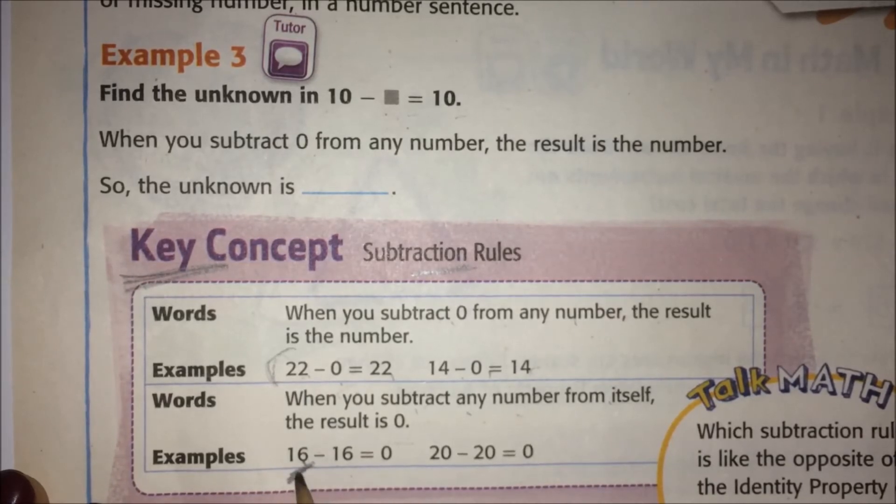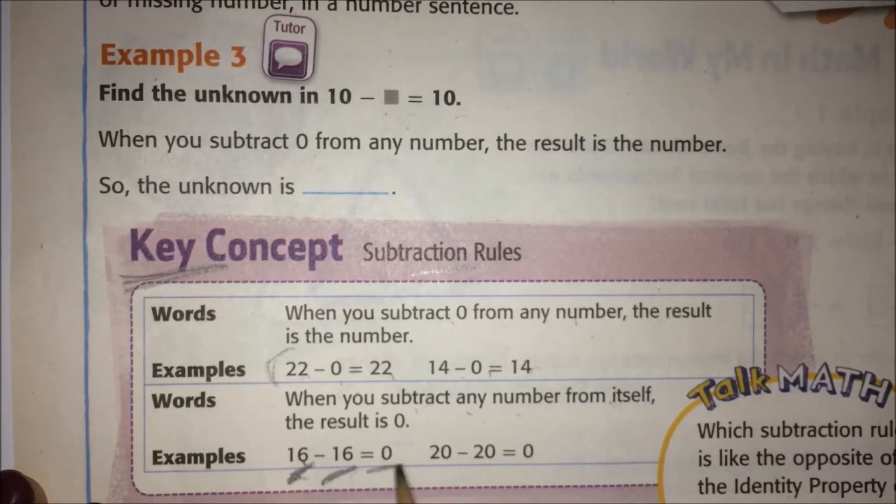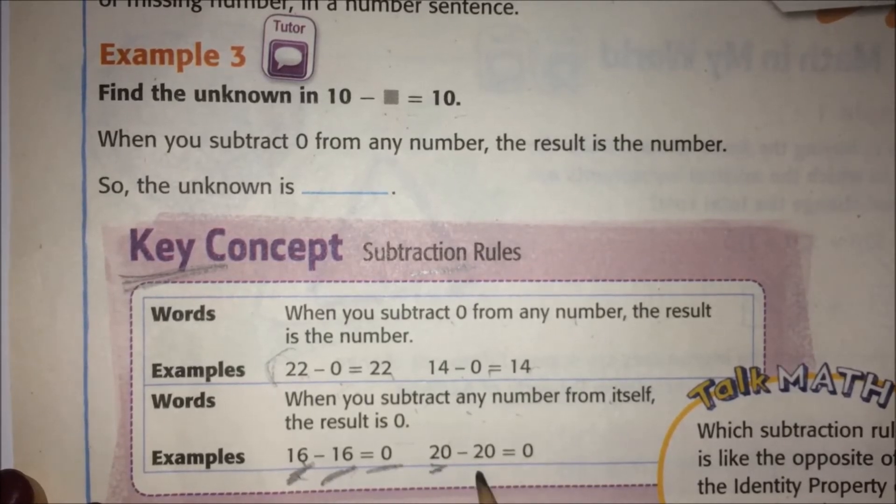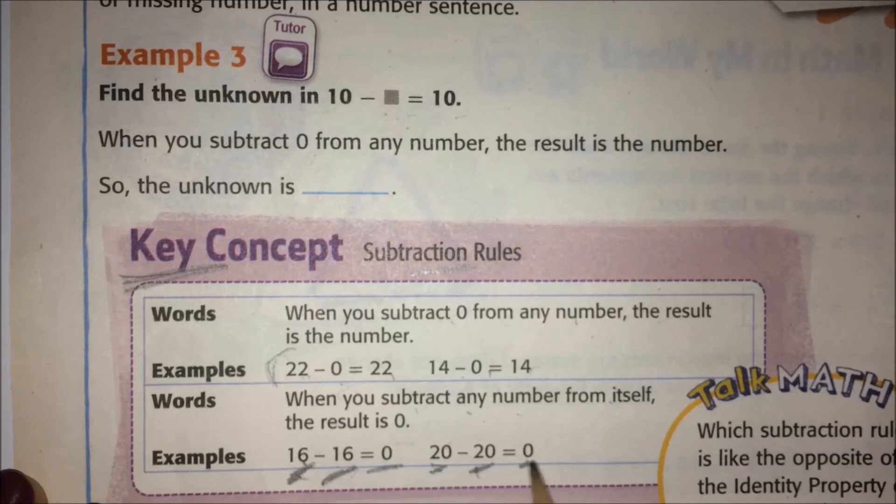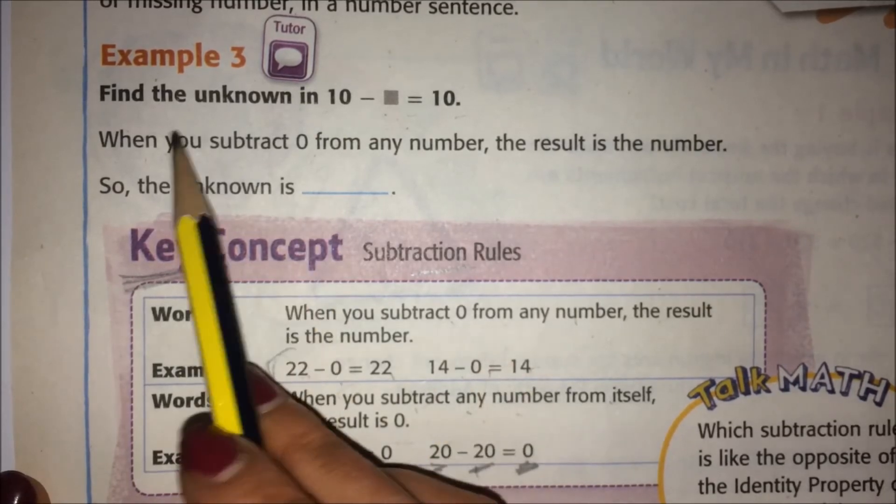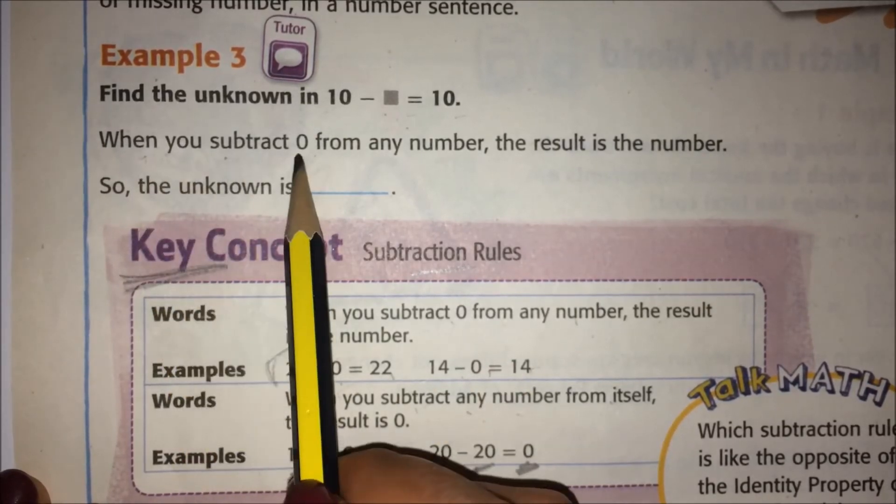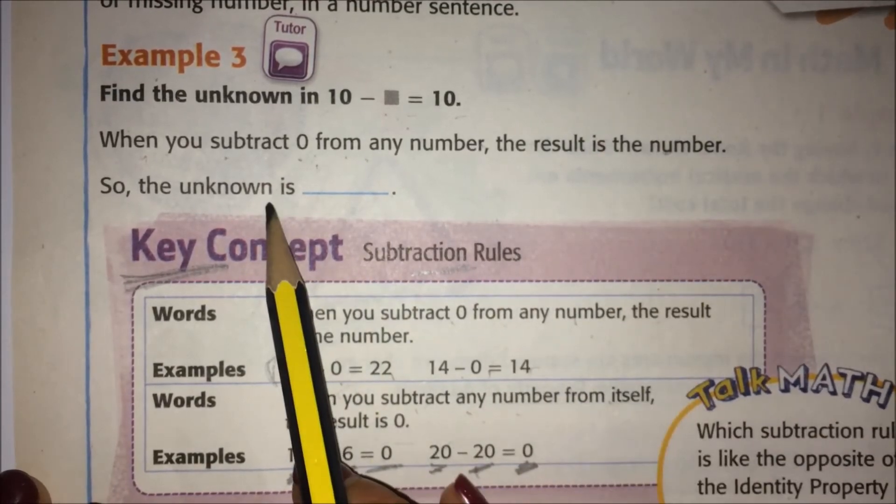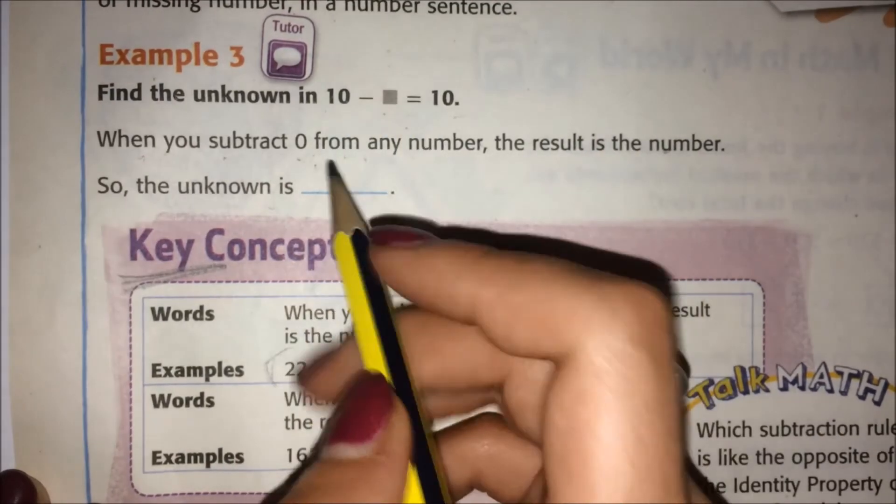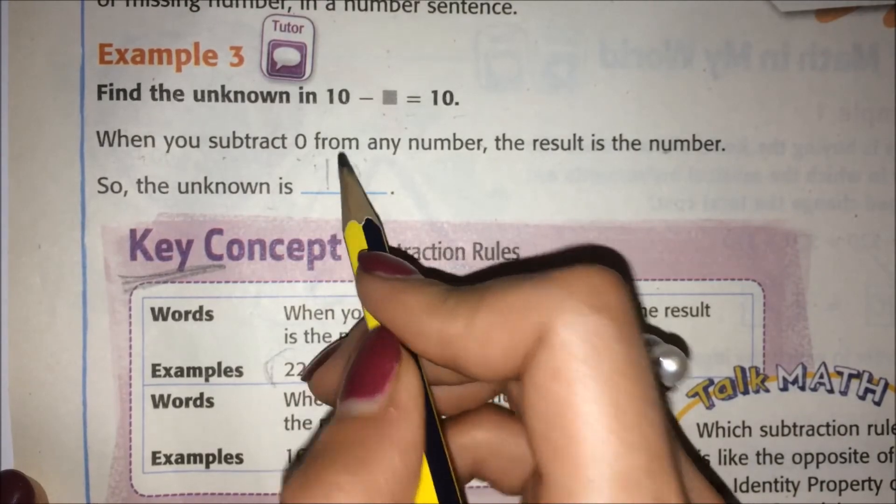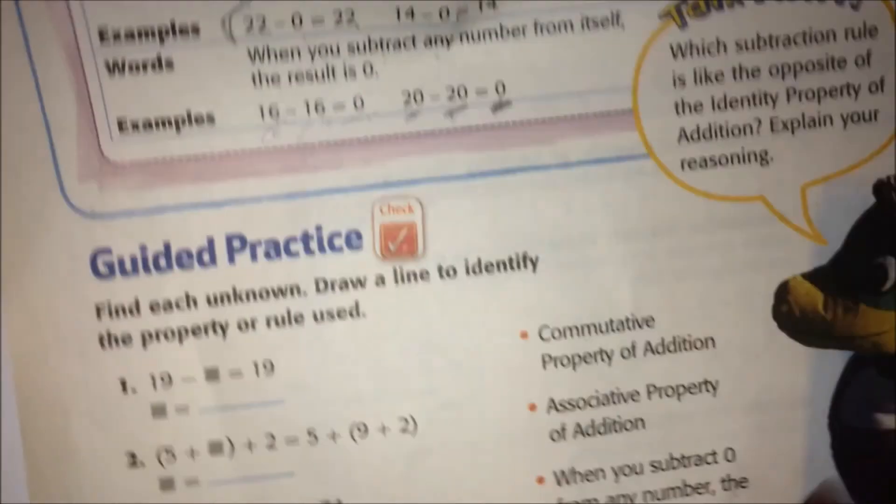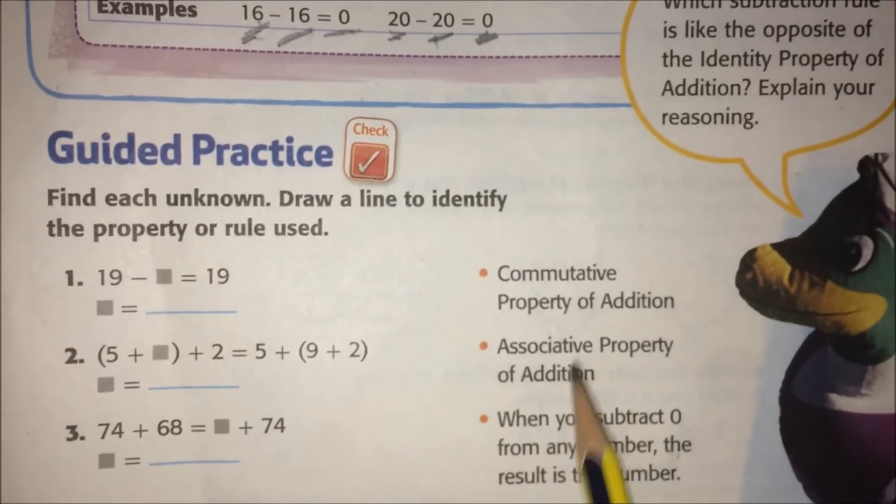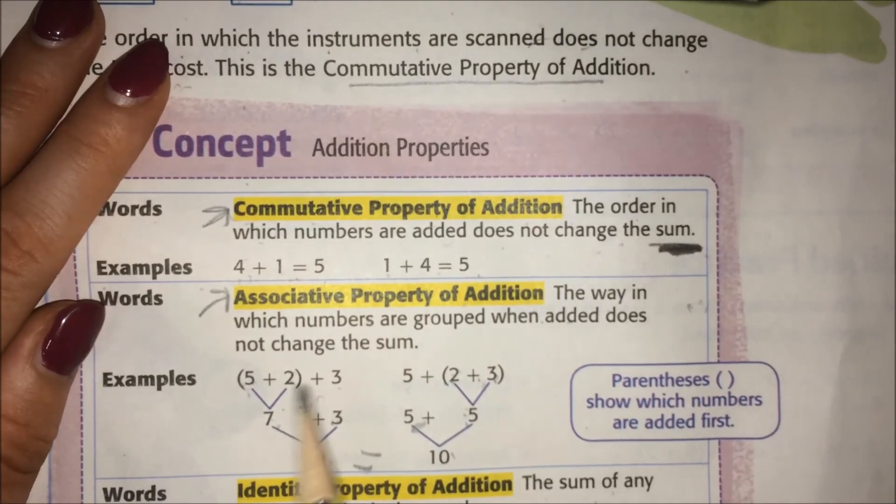If you have twenty and you lose twenty, you still have nothing. When you subtract zero from any number, the result is the number. So the unknown is ten. Throughout this lesson, you're going to need to know these properties. So you're going to use these key concept boxes.